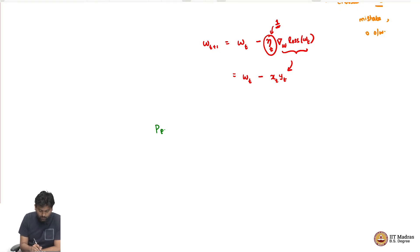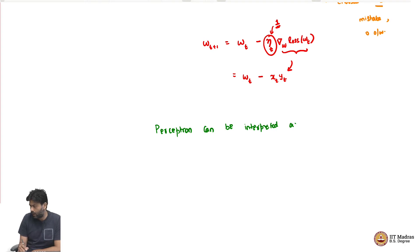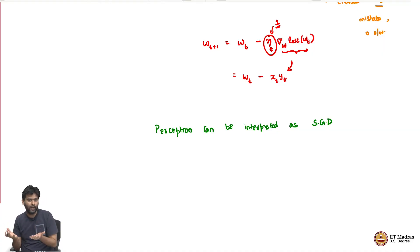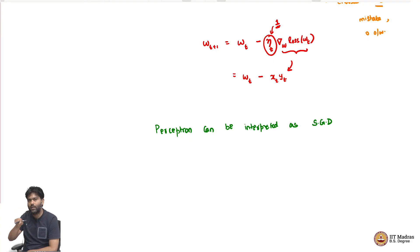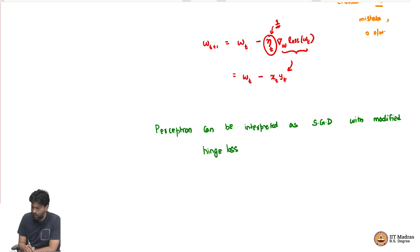Perceptron can be interpreted as follows: because data points come one at a time, you can think of this as a stochastic gradient descent problem, where instead of taking a gradient with respect to the entire data set, you are only taking it with respect to one data point which can be randomly drawn. It is a stochastic gradient descent problem and you are moving in the gradient direction dictated by that point, with this modified hinge loss and step size equal to 1.